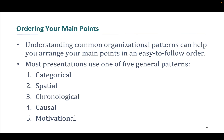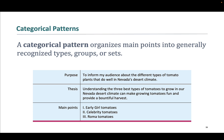First is categorical. A categorical pattern organizes main points into generally recognized types, groups, or sets. For example, the purpose: to inform my audience about the different types of tomato plants that do well in Nevada's desert climate. The thesis: understanding the three best types of tomatoes to grow in our Nevada desert can make growing tomatoes fun and provide a bountiful harvest. So the main points would be different types of tomatoes — main point one: Early Girl tomatoes; main point two: Celebrity tomatoes; main point three: Roma tomatoes.